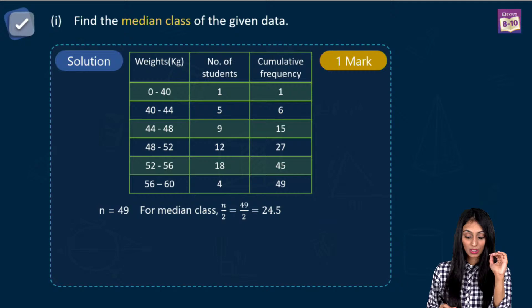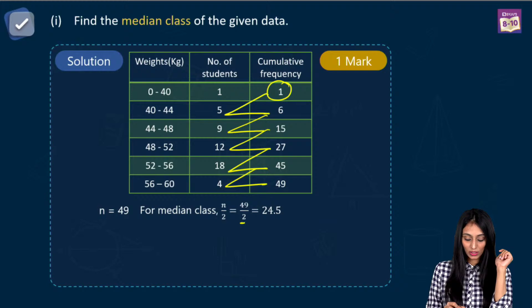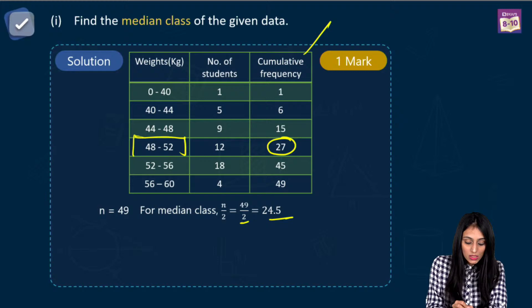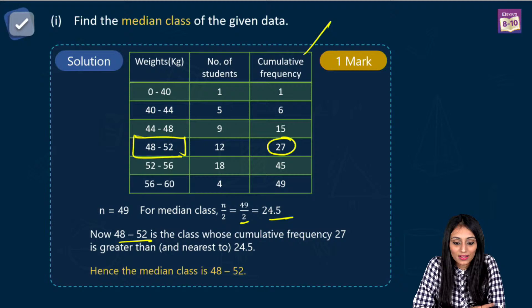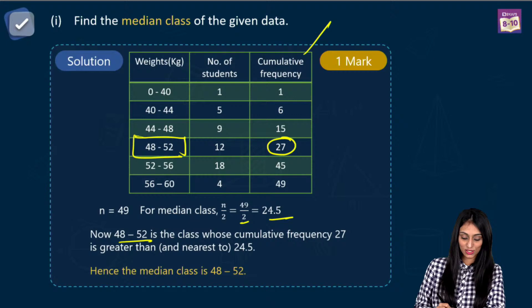To find the median class, first make the cumulative frequency column. Adding frequencies: 1, 6, 15, 27, 45, 49. N by 2 equals 49 by 2 equals 24.5. The cumulative frequency just greater than 24.5 is 27, which corresponds to the class interval 48 to 52. So the median class is 48 to 52.